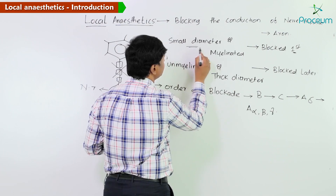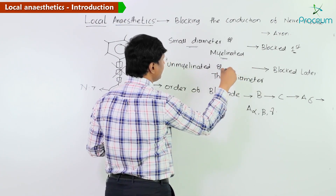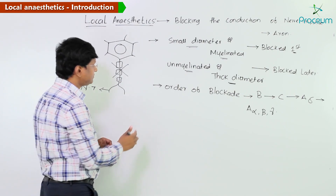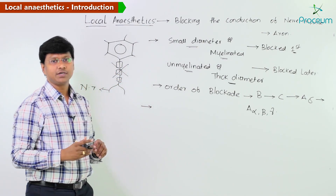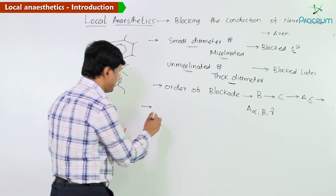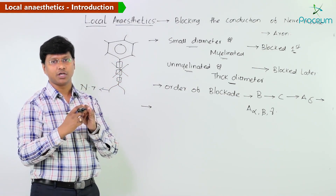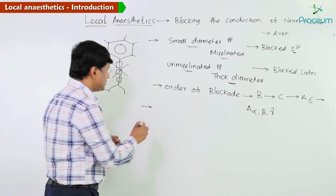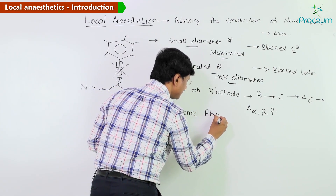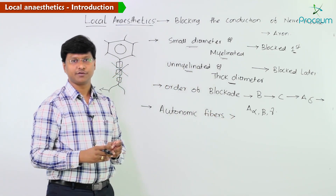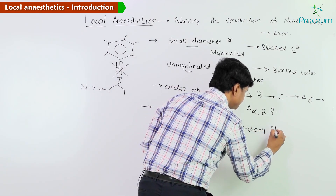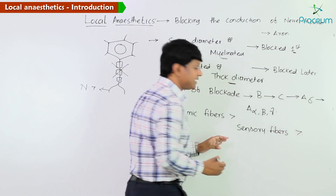To summarize: small diameter and myelinated fibers are blocked first, followed by unmyelinated and thick diameter fibers. Among autonomic, sensory, and motor fibers, autonomic fibers are blocked first, followed by sensory fibers, and finally motor fibers are blocked last.